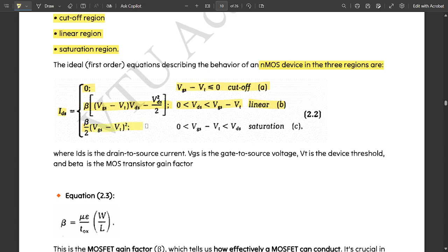In case of saturation region, the equation is given by beta by 2 into VGS minus VT, the whole square, and the condition is VDS is greater than VGS minus VT in case of saturation region.